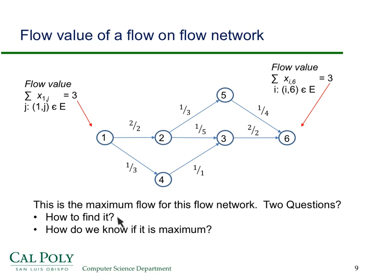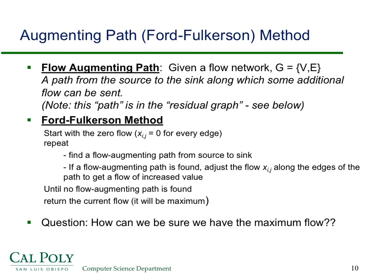In this screencast I'm going to talk about how we find it. There's an algorithm called Edmonds-Karp, and then in the next screencast I'll talk about how we know it happens to be the maximum flow. The algorithm we're going to use is based on what's called the Ford-Fulkerson method. Some people call it the Ford-Fulkerson algorithm, but it really leaves too many details out to be called an algorithm. It's based on the idea that you can find what's called a flow augmenting path — a path from the source to the sink along which some additional flow can be sent. The path is in something called the residual graph.